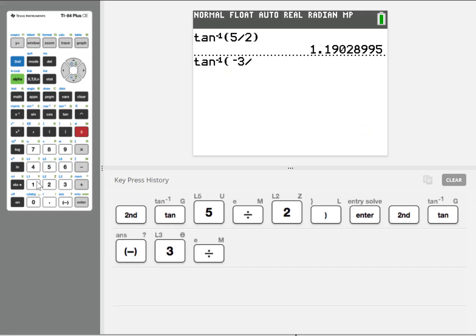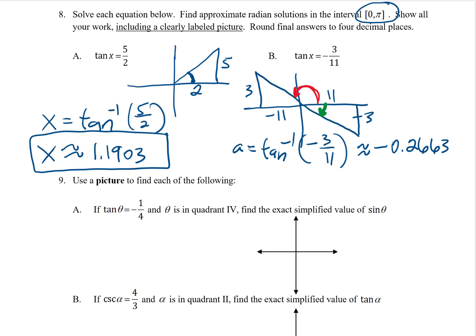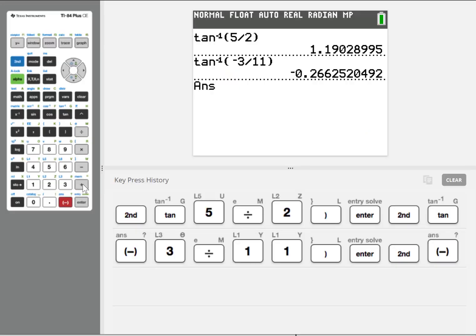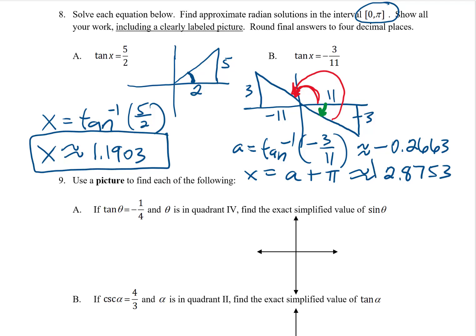Tangent inverse of negative 3 over 11 gives me negative 0.2663. That is not the answer. To get my answer I have to add 180 degrees — that is, pi radians — onto that. So x equals A plus pi. Going back to the calculator, taking that last answer and adding pi gives 2.8753 radians. That is the final solution. We used the tangent inverse function for the one angle it knew about, then used the symmetry of the picture to find the answer in the interval we were looking for.